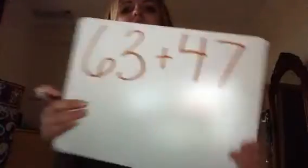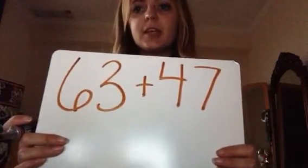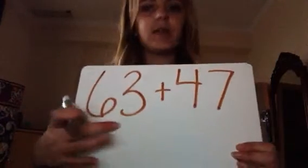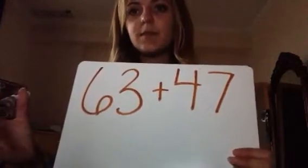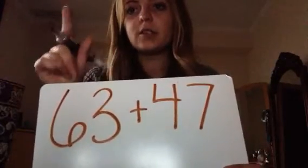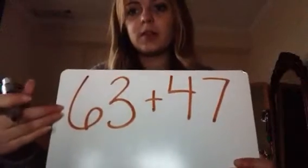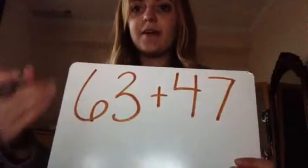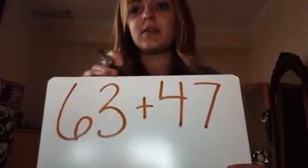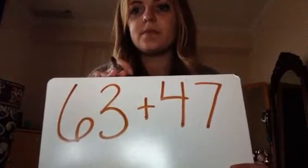So if I have a number, 63 plus 47, to do ballpark estimation, I want to round these numbers and see which one they're closer to. So I'm going to look at 63 and decide: is 63 closer to 60 or closer to 70? The rule is that if the number ends in a 1, 2, 3, or 4, it's going to be closer to 60. If it's 5, 6, 7, 8, or 9, it's closer to the next number, which would be 70. So 63 is closer to 60, so I'd write 60.